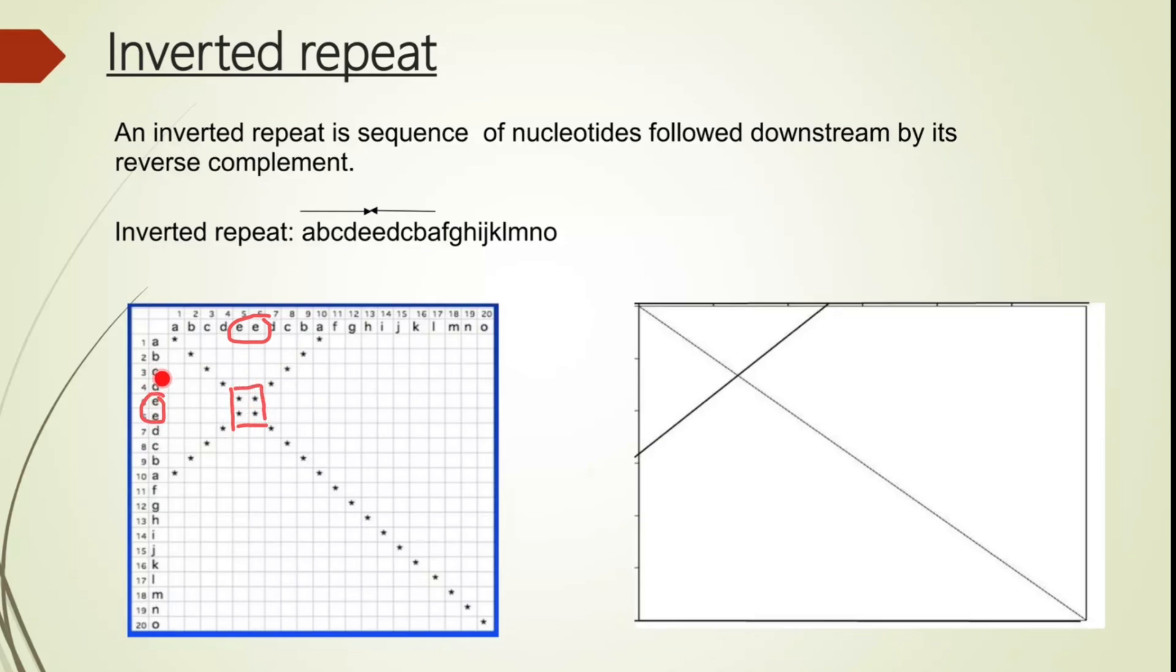If we have a stretch of the same, say, amino acid for three, four, five positions, then we are going to have also three, four, five by five box here, which means, again, low complexity region.